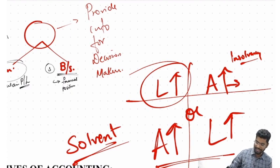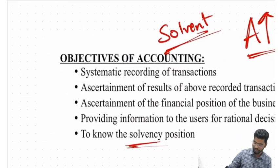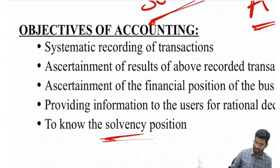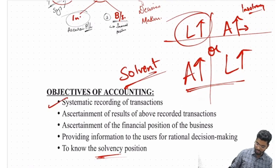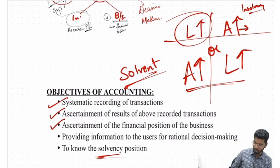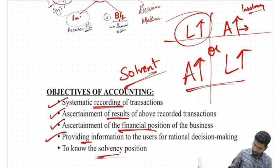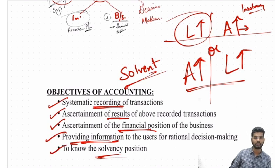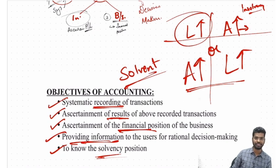Only if I have my balance sheet can I know my asset-liability position and determine whether I'm solvent. To recap the five objectives: first, systematic recording of transactions; second, ascertainment of results; third, to know the financial position; fourth, to provide information; fifth, to know the solvency position. I shall be uploading part two tomorrow — thank you so much.